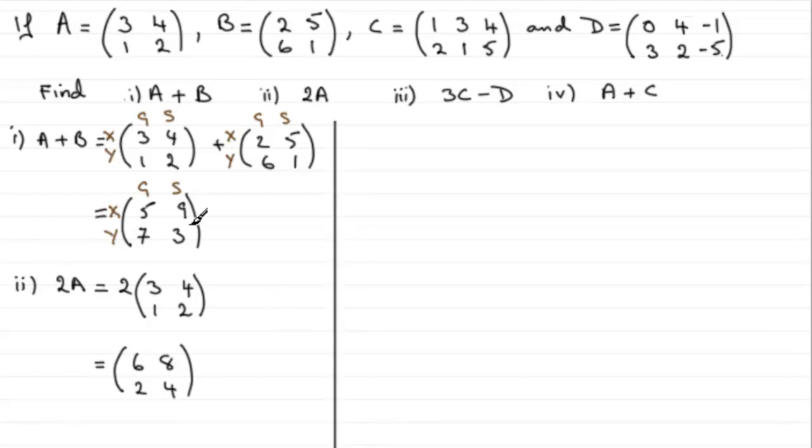Now I've shown you how we can do addition, but subtraction is exactly the same - obviously just subtract element with element. So in example three I've got an example here where we've got to do 3 times the matrix C minus the matrix D. You might like to pause the video and have a go at this one just for a bit of practice.